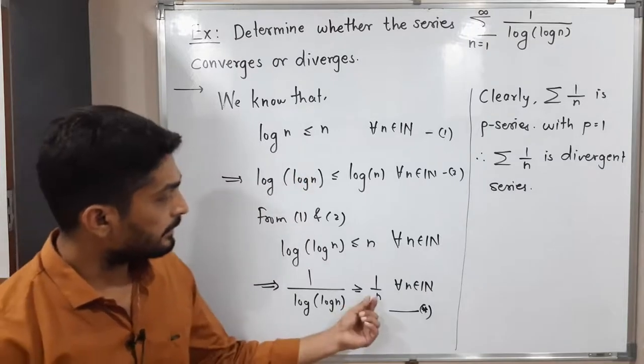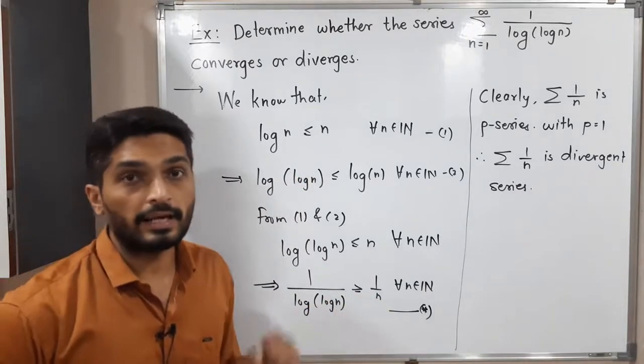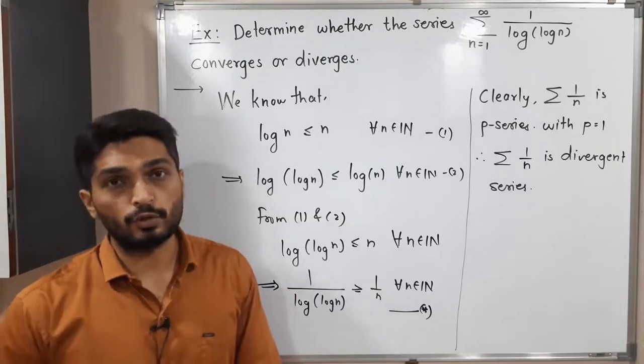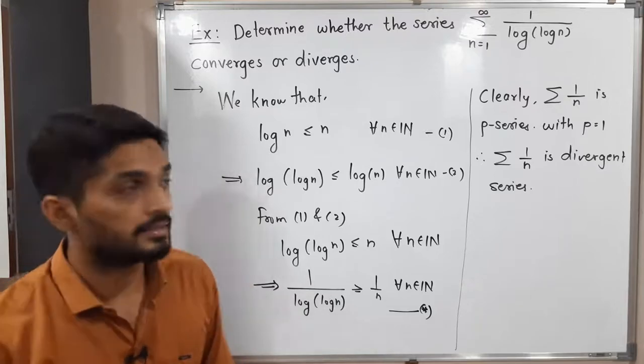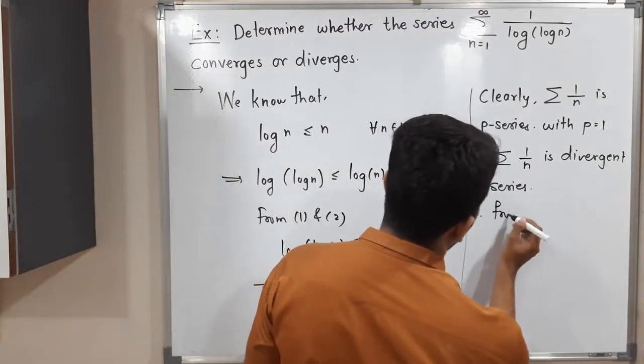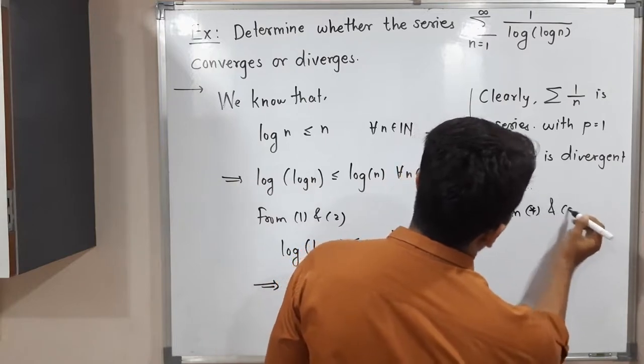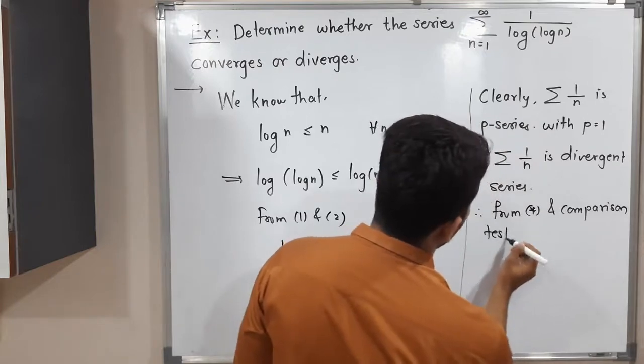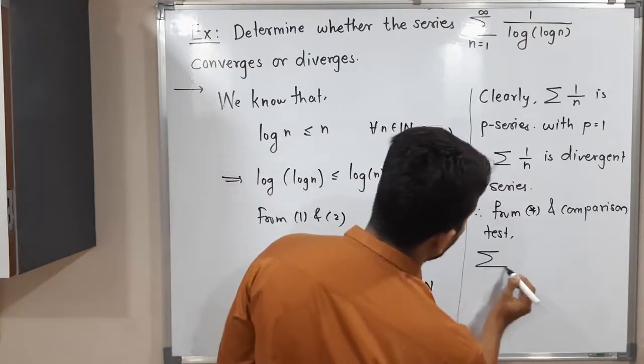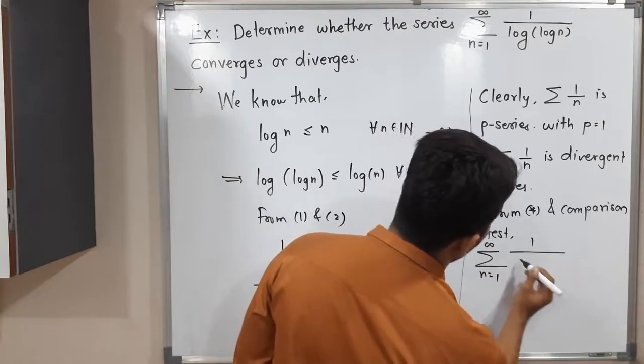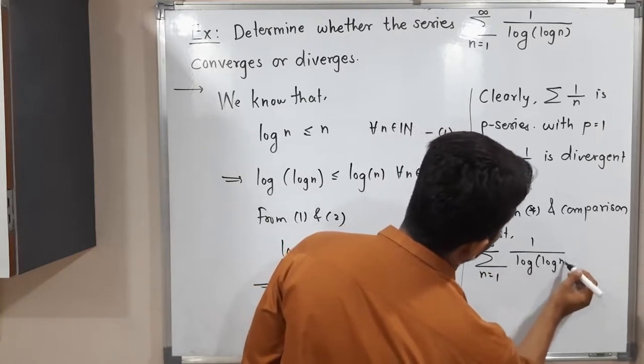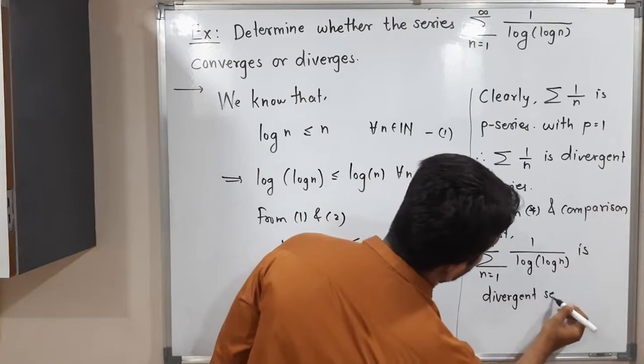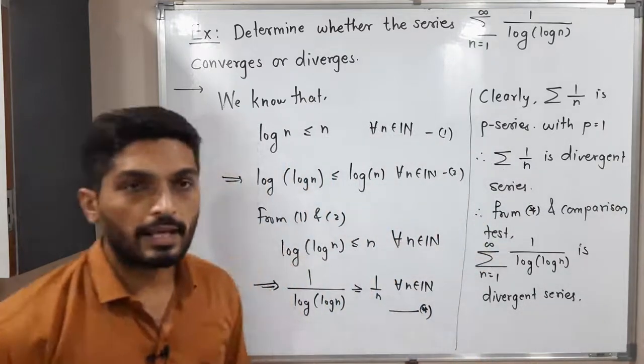It is a divergent series, and we have some series which is larger than that. So if the smaller series is divergent, obviously the larger series is also divergent. We can say using comparison test. Therefore, from star and comparison test, summation from n equals 1 to infinity of 1 upon log of log n is a divergent series.